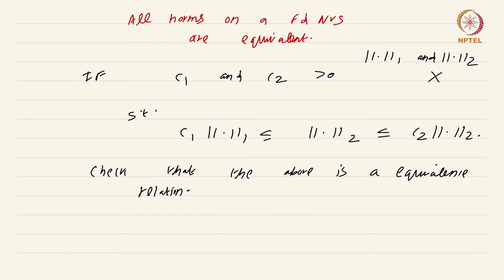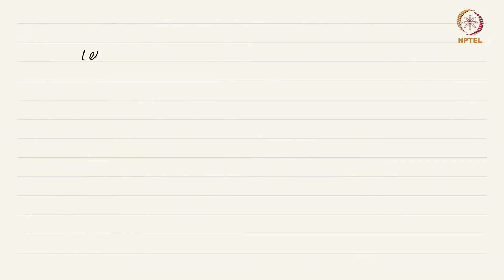Once you have checked that, let me now proceed and give you a quick sketch of a proof that all norms on a finite dimensional normed vector space are equivalent. Let V be a finite dimensional vector space.